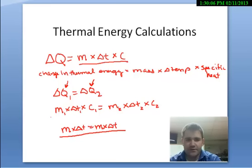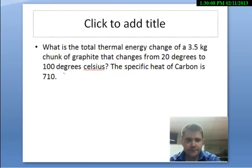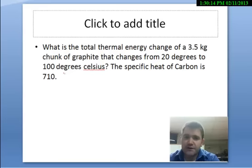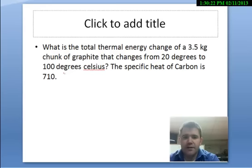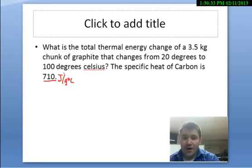Now on to some practice problems. What is the total thermal energy change of a 3.5 kilogram chunk of graphite that changes from 20 degrees to 100 degrees Celsius? The specific heat of carbon — and by the way, graphite is carbon — is 710 joules per gram per degree Celsius, meaning it takes 710 joules of energy to heat one gram of graphite by one degree Celsius.